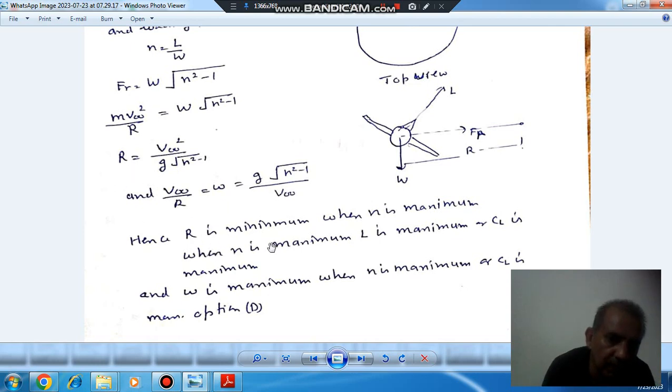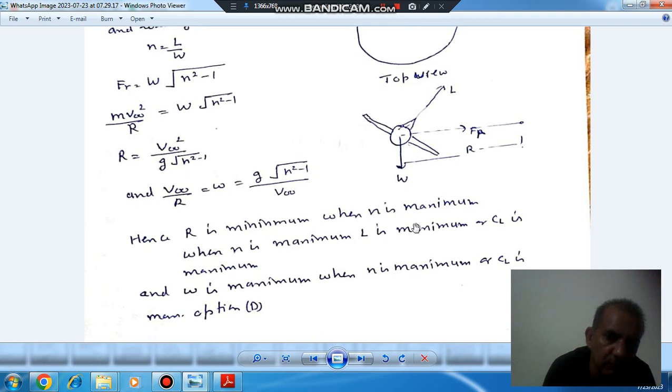Now R is minimum when N is maximum. N is maximum when L is maximum, because N equals L by W. Lift is maximum when CL is maximum. So R is minimum when CL is maximum, and omega is maximum.